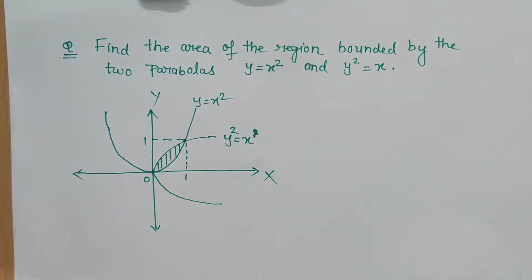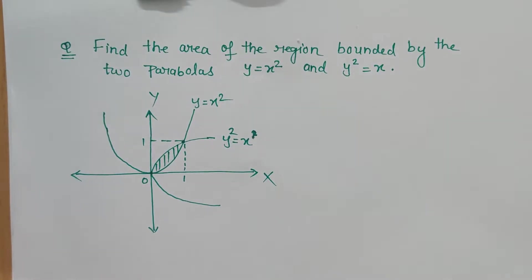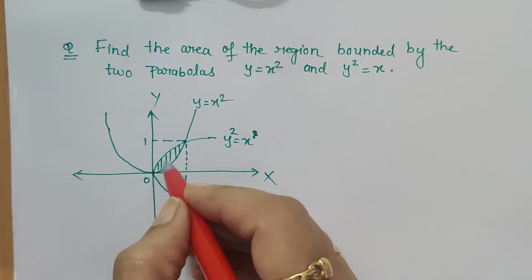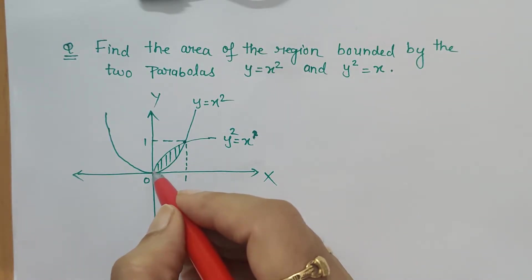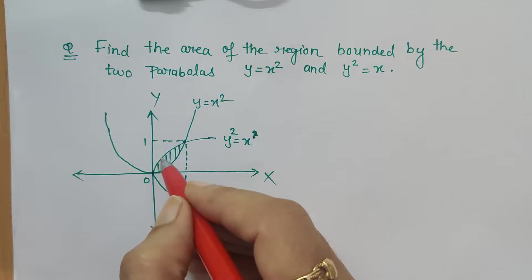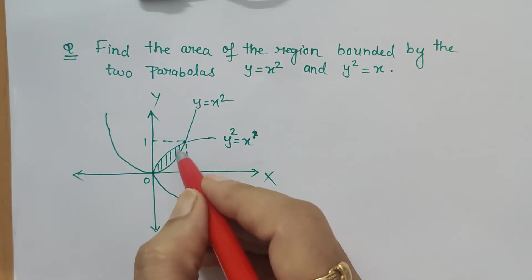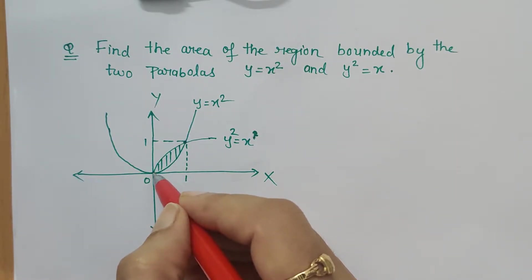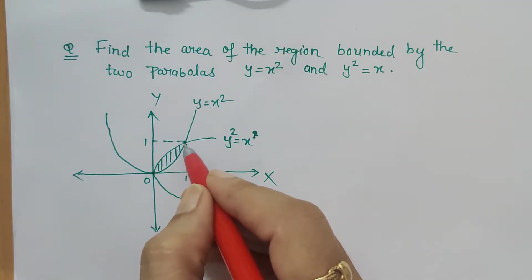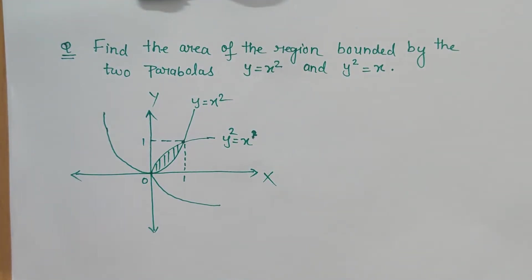I have explained in my previous videos how we find area bounded by two curves. We have to check which curve is above and which curve is below. Area equals the equation of the upper curve minus the equation of the lower curve.